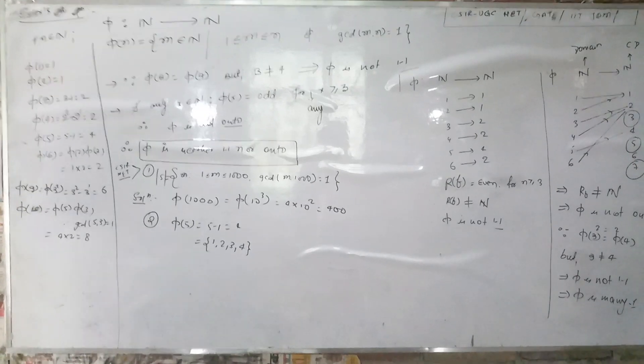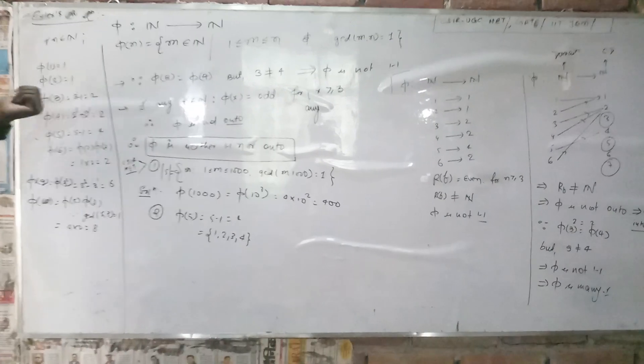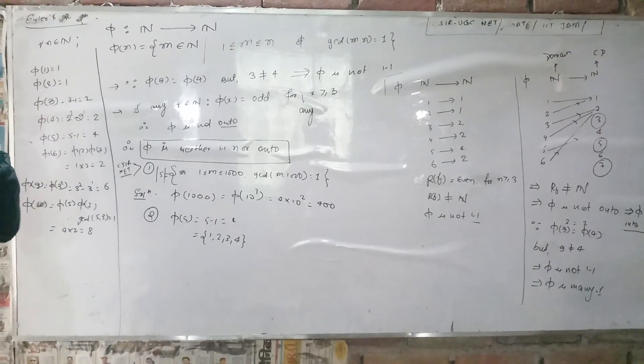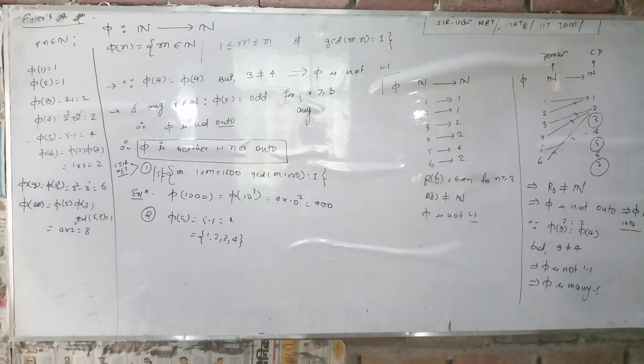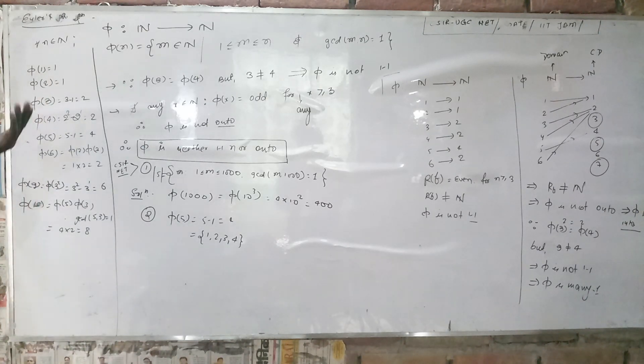The set is phi(2) equals singleton {1}, and the gcd of 1 and 2 is 1. So there is only one element lying between 1 and 2 with gcd 1, which is singleton {1}. Phi(3) equals 3 minus 1, which equals 2, as we discussed earlier.